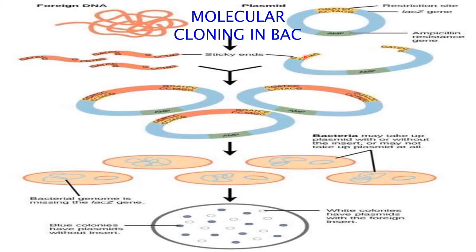The steps involved in molecular cloning of a BAC vector: first, the cloning vector, that is the BAC vector, as well as the foreign DNA, will be digested with the same restriction enzyme to get sticky ends in both the gene of interest and the vector.